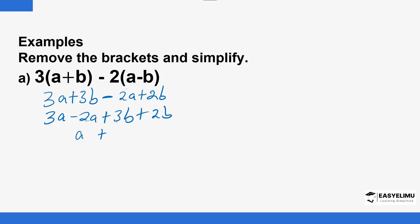Then 3 plus 2 is 5, so we have 5b. This simplifies to a plus 5b. Since a and 5b are unlike terms, you cannot add or subtract them, so that is the furthest we can go with that expression.